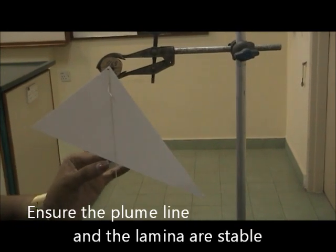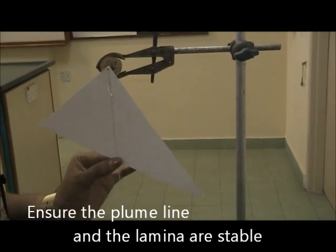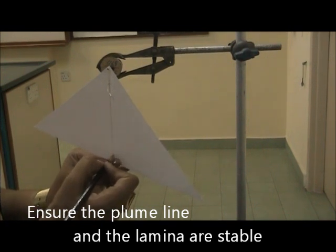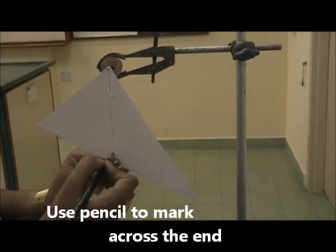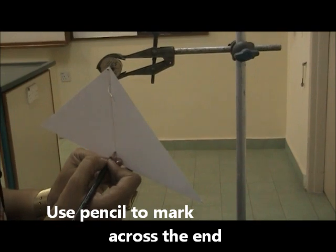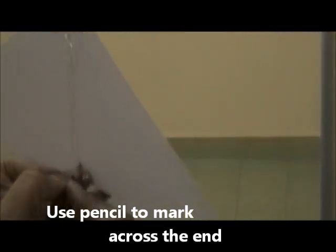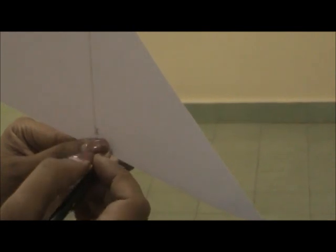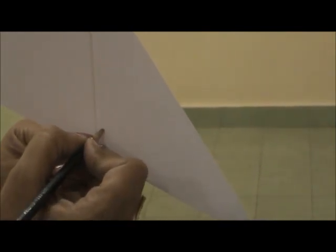Hold at the edge. Use a pencil and mark across at the end where the plumb line is suspended. And mark it 1.